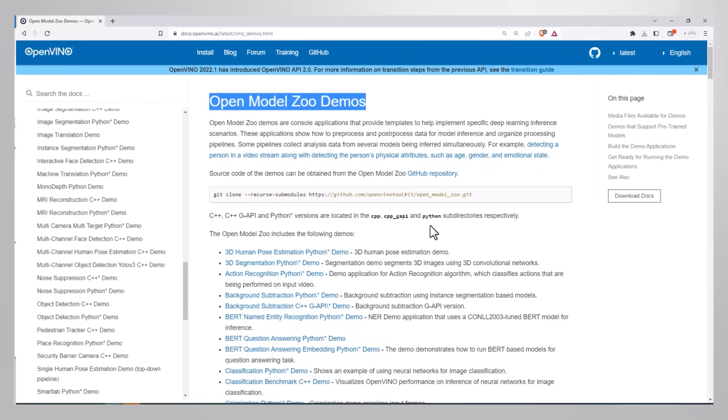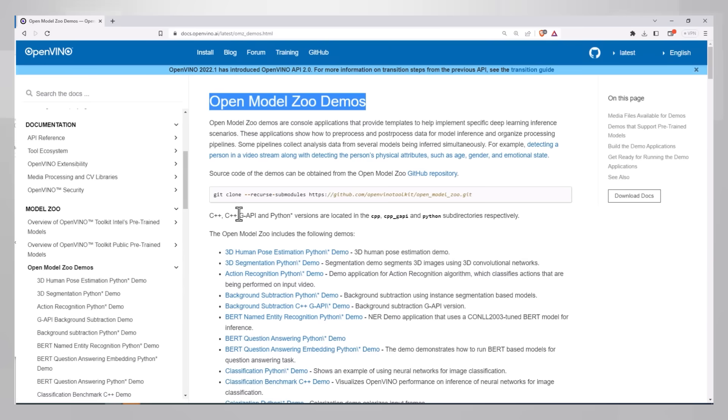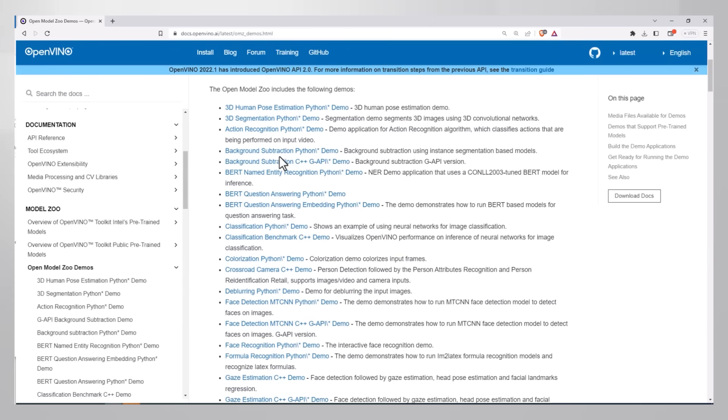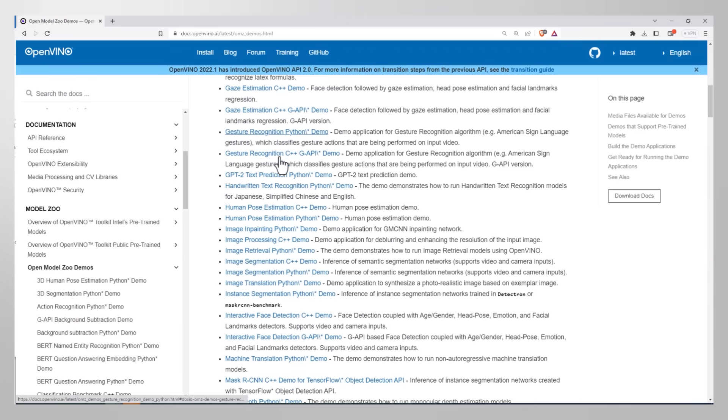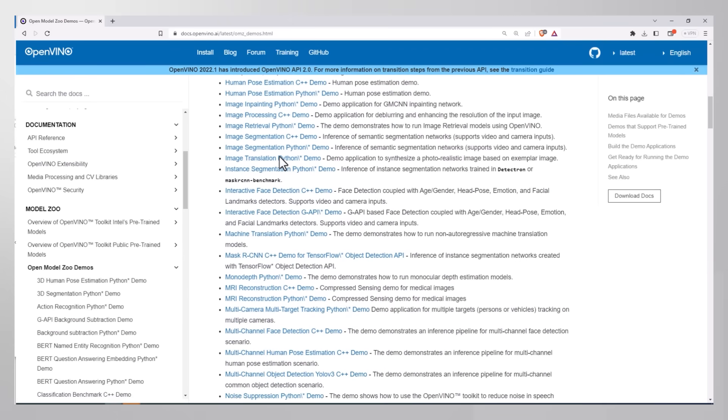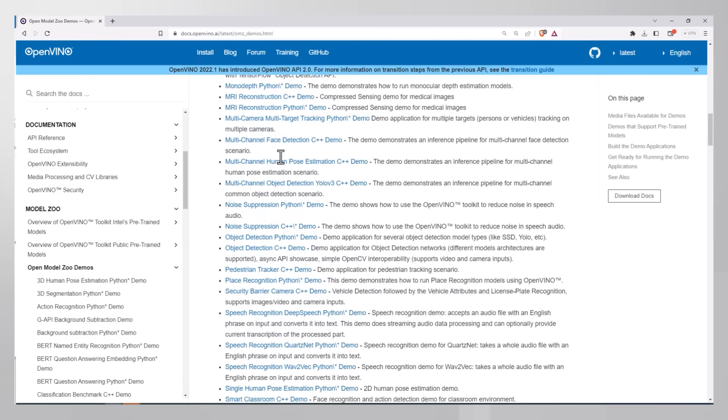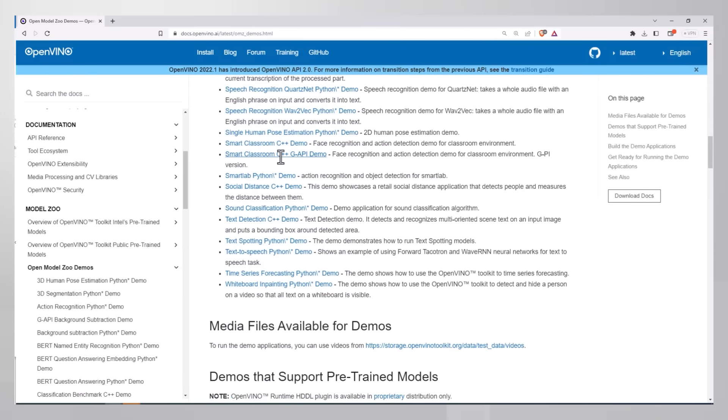OpenVINO OpenModelZoo is a treasure of models and demos that you can download and use as a demo or as a starting point to a real product or project. Please check my other video on using the demos.